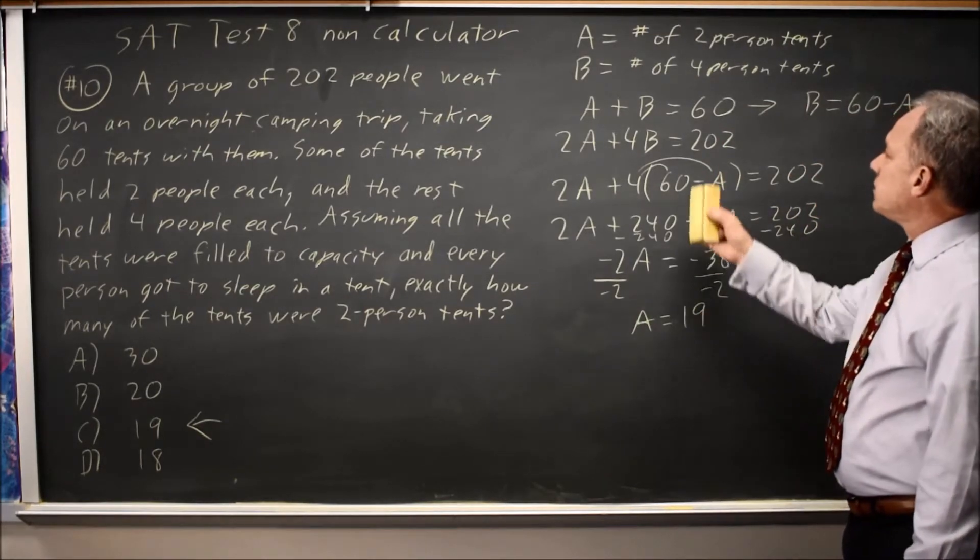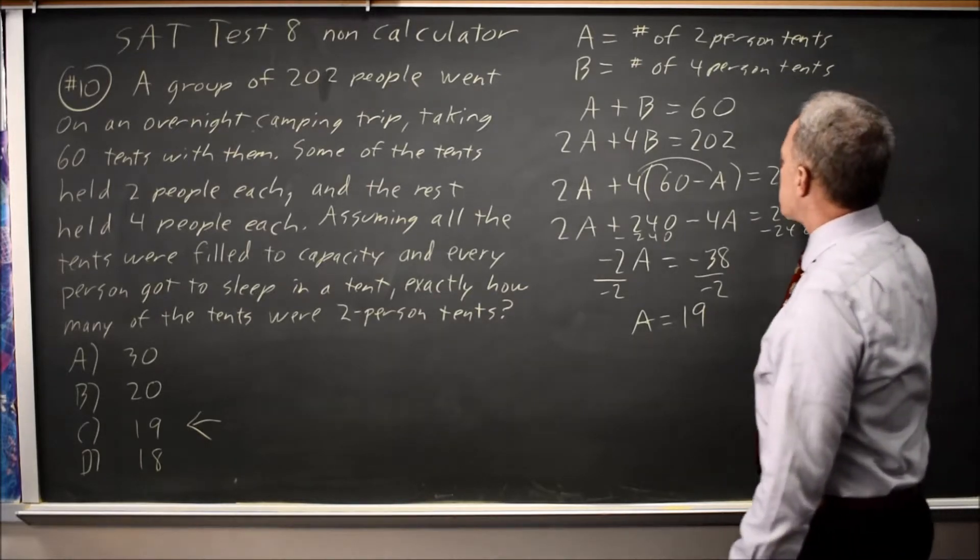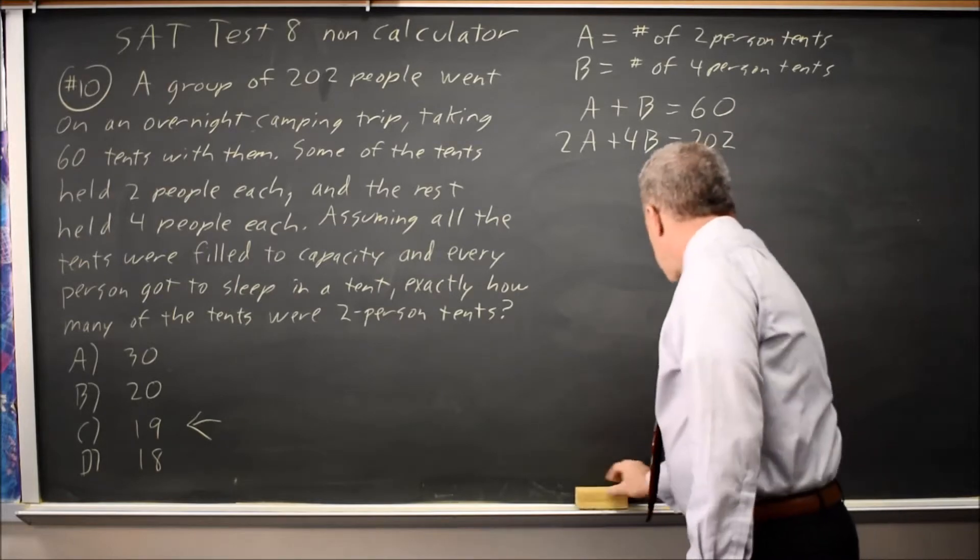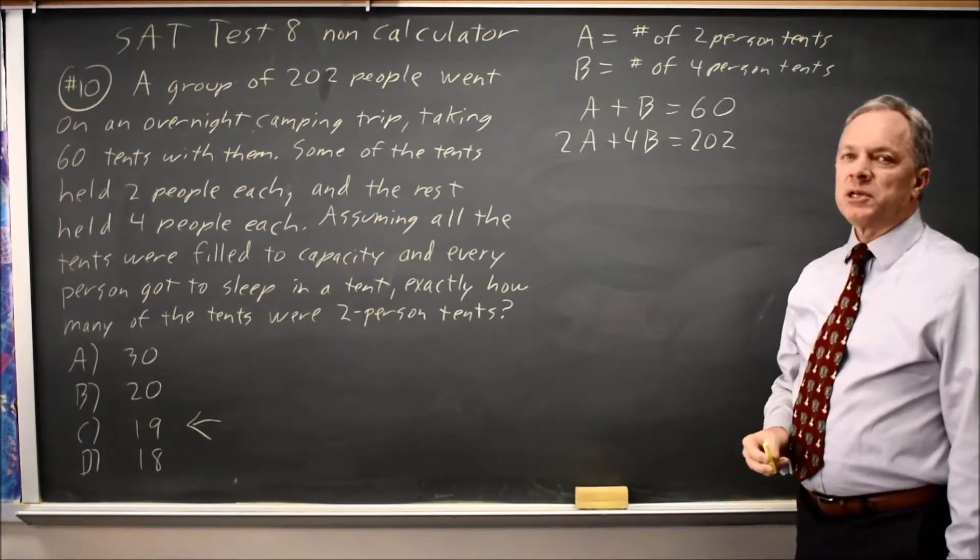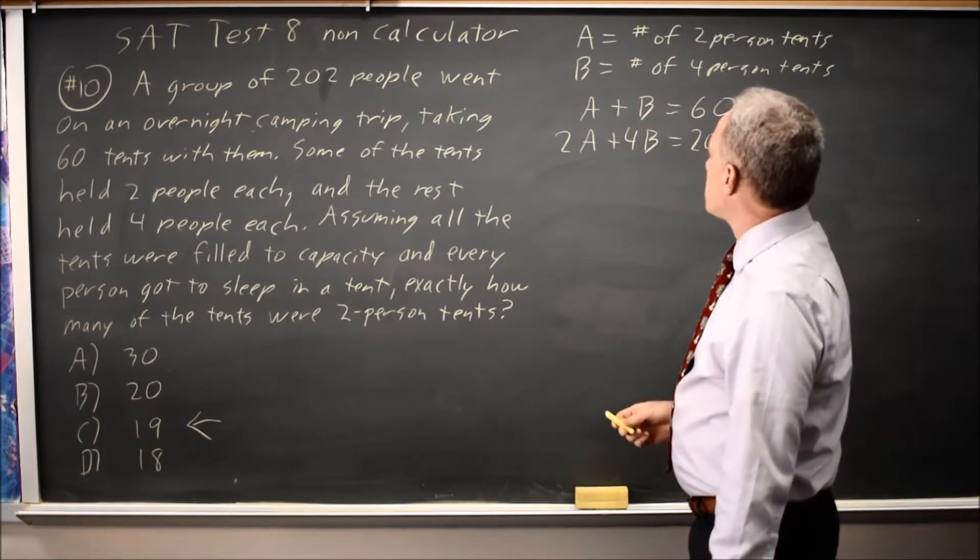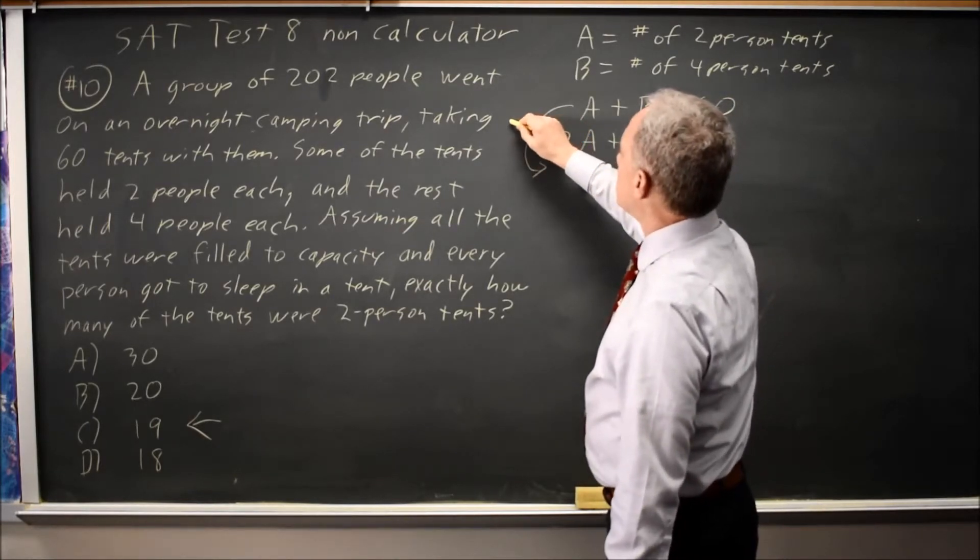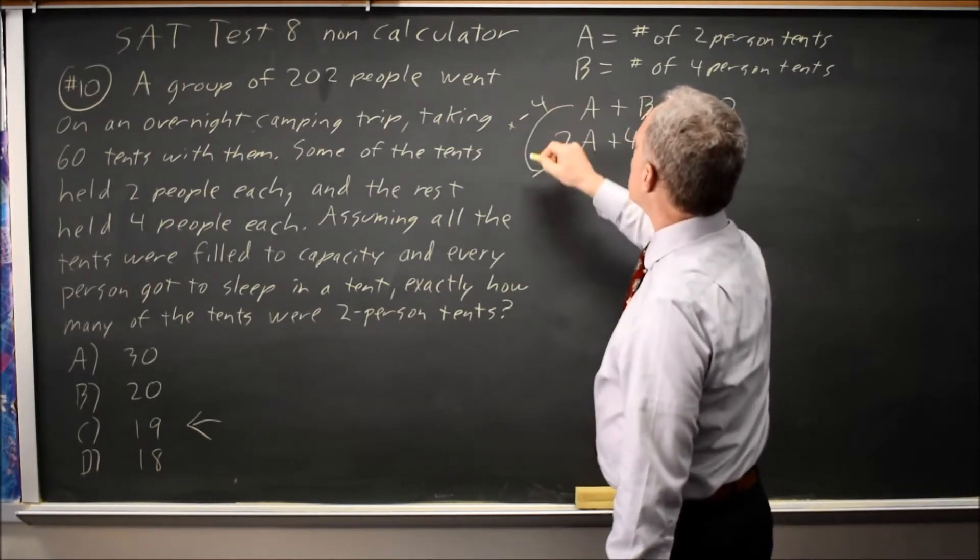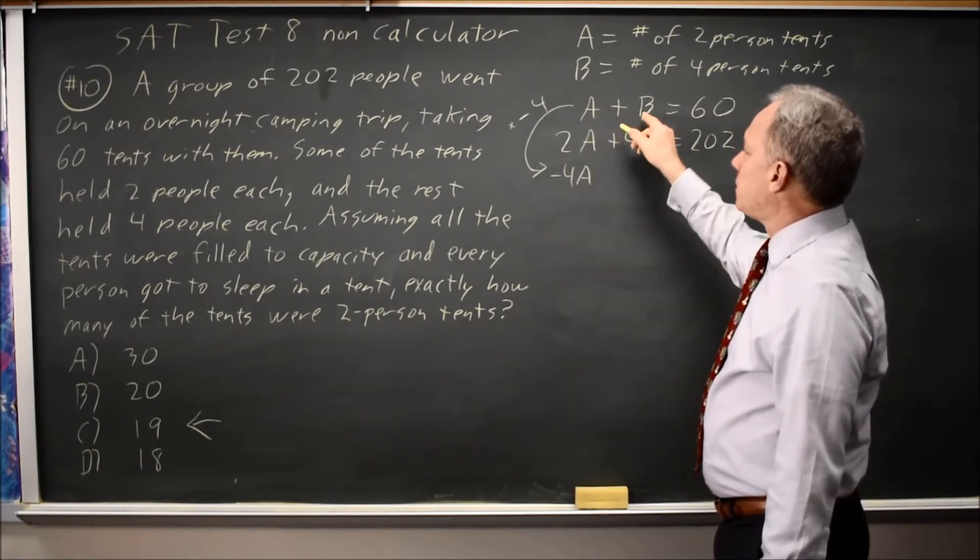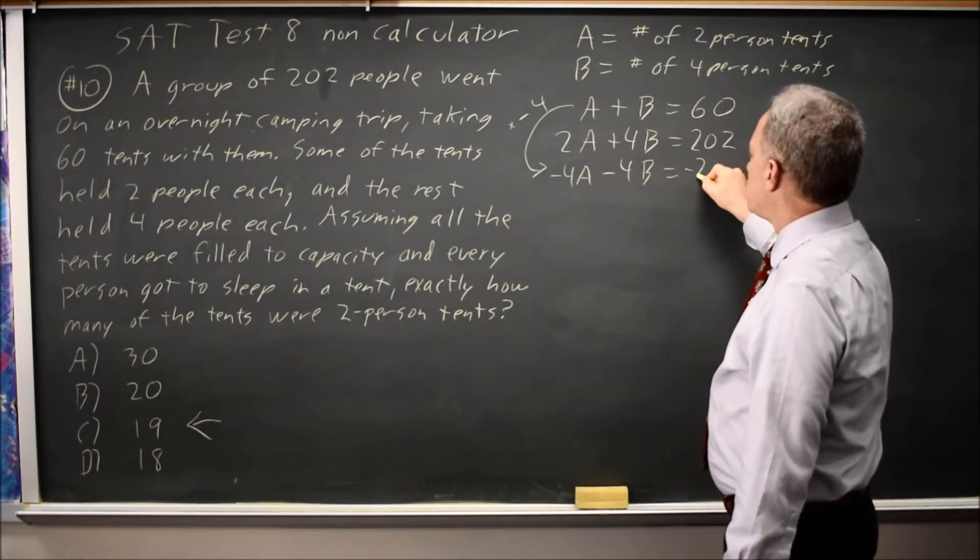And frequently substituting in for one variable will be the easiest approach. But there's another approach that's well worth checking, because often the question is presented in a form where eliminating a variable is the easiest. I'm looking for A, so I want to get rid of B. Let's multiply the first equation through by negative 4. So negative 4 times A is negative 4A. Negative 4 times B is negative 4B. Negative 4 times 60 is negative 240.